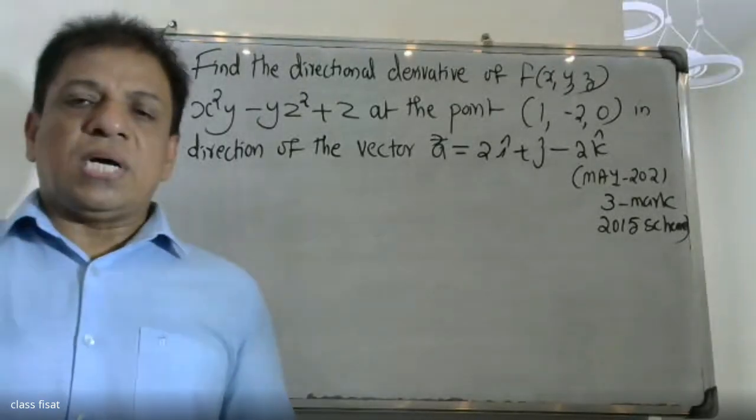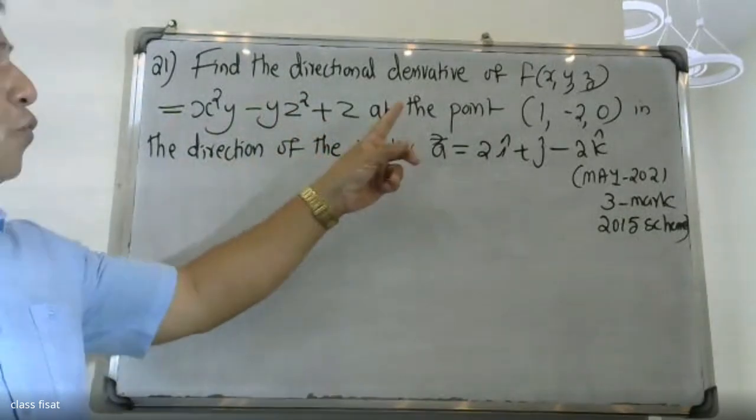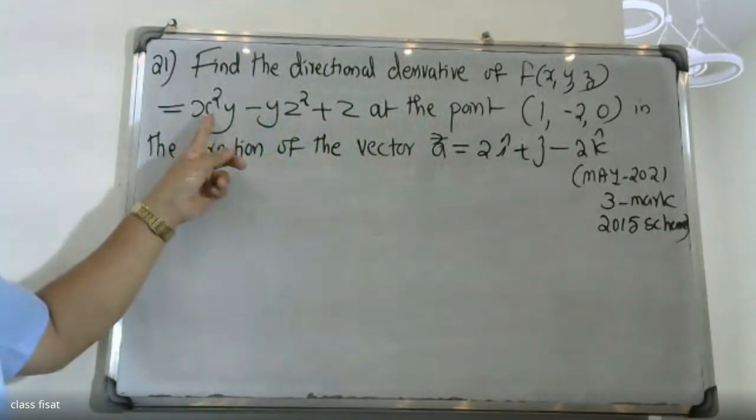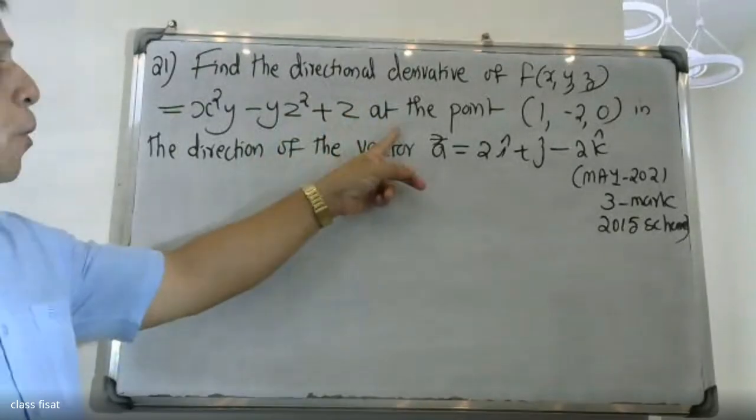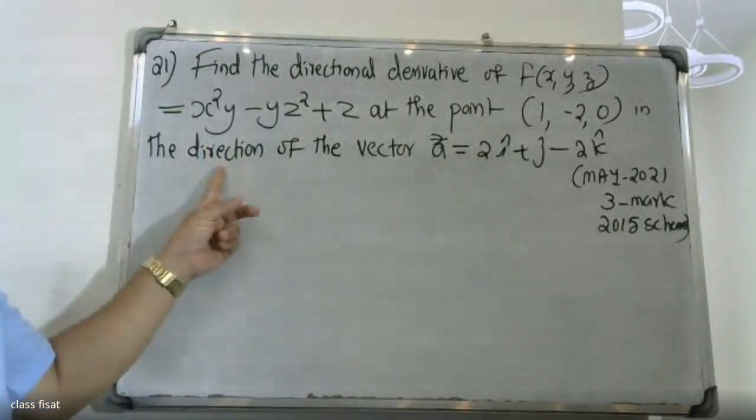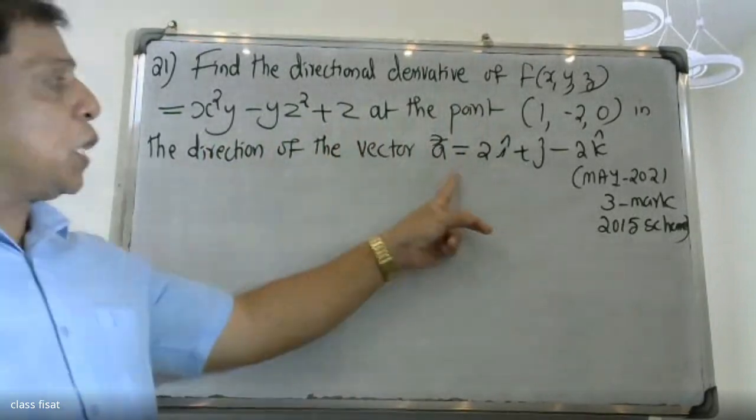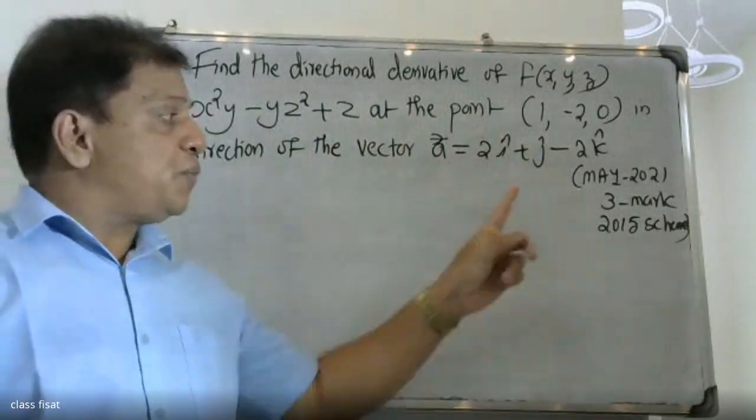Good morning students! A university question. Find the directional derivative of f(x,y,z) = x²y - yz² + z at the point (1, -2, 0) in the direction of the vector a = 2i + j - 2k. This is the entire question.